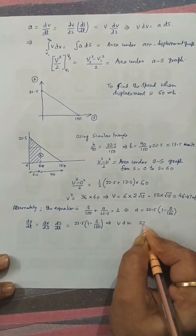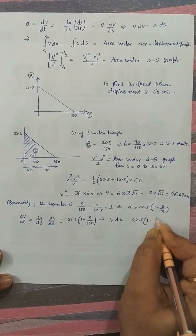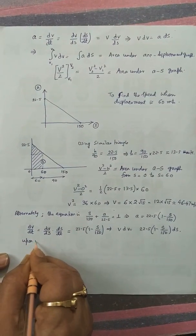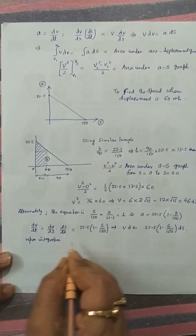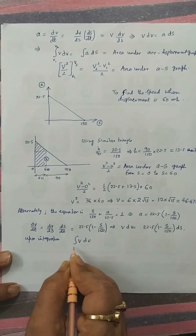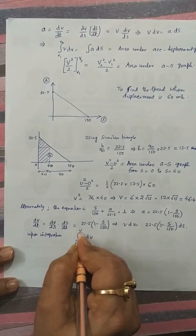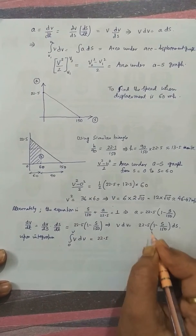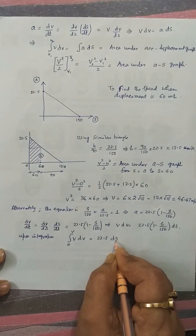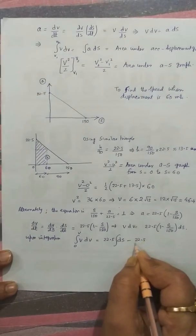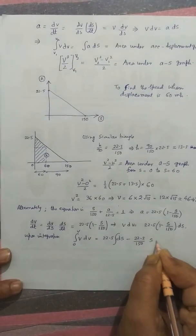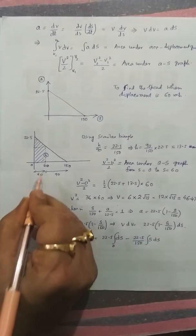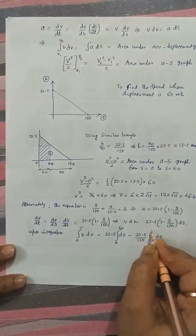V dv is equal to 22.5 times 1 minus s by 150 ds upon integration. V dV where v varies from 0 to the desired value v is equal to 22.5 after opening up the bracket ds minus 22.5 by 150 s ds where s varies from 0 to 60.